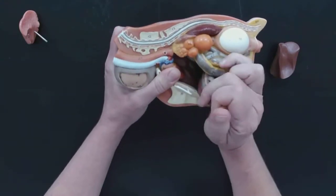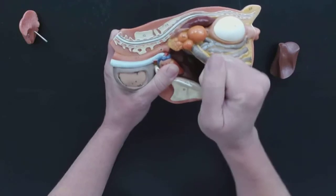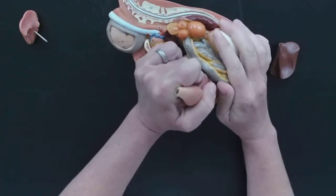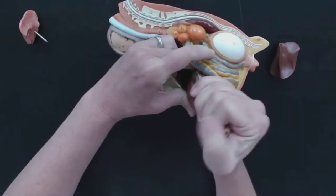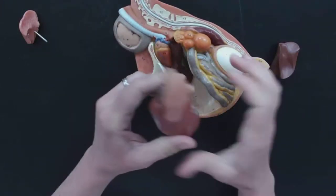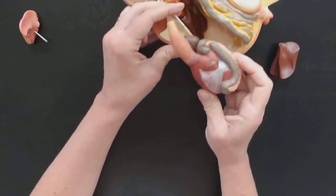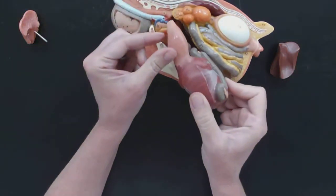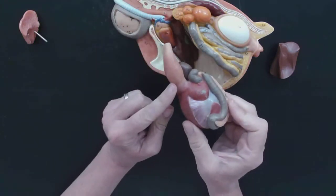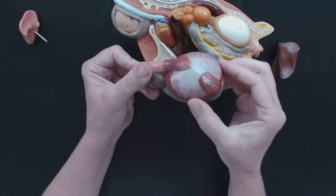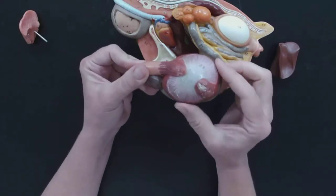And now I'm going to take out the proventriculus gizzard. It's tight. I know I can do it. I don't want to break the model, but I want this out. Here we go. So we could see how that was attached right here. This is the proventriculus, and then this large muscular portion is the gizzard.